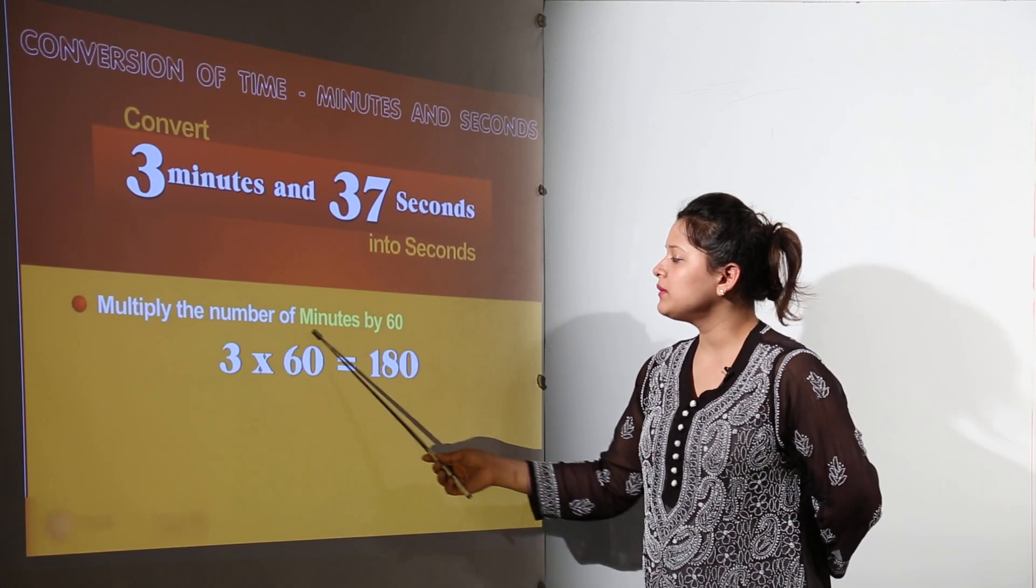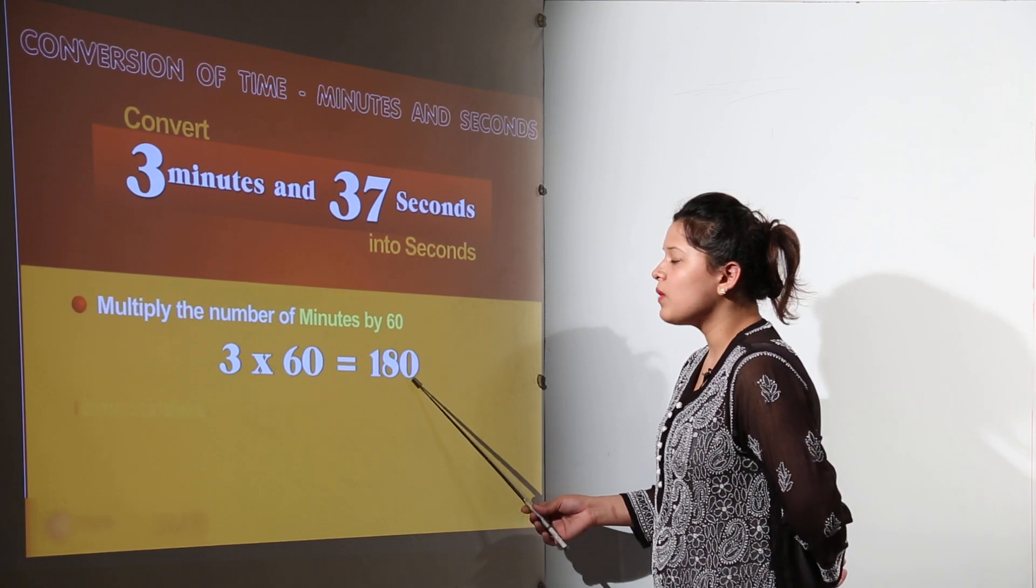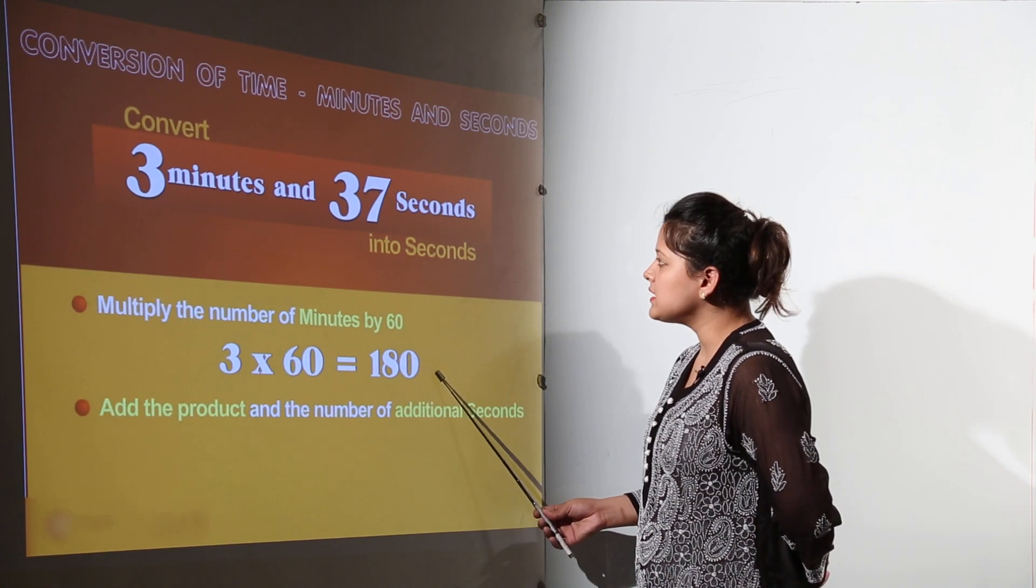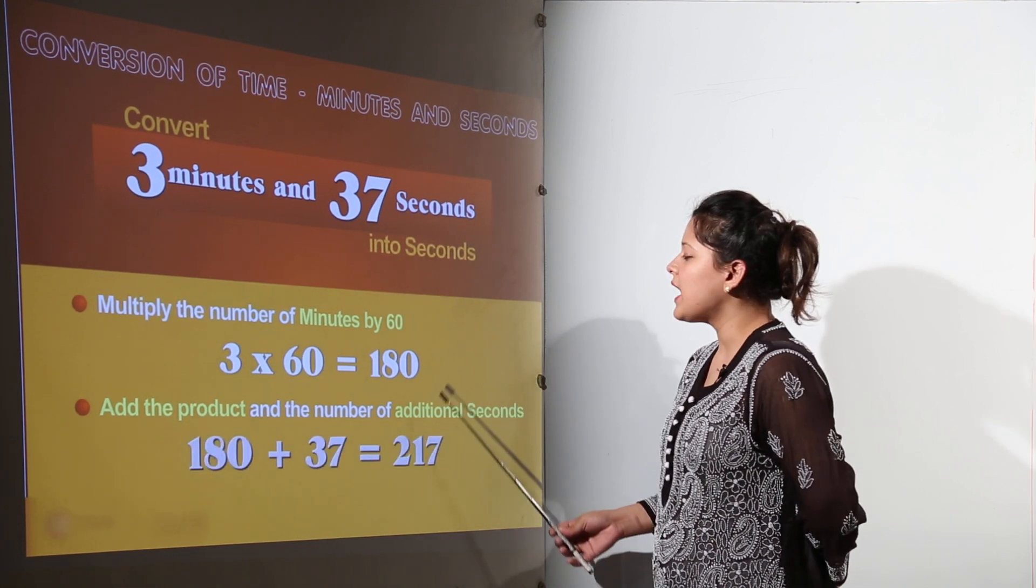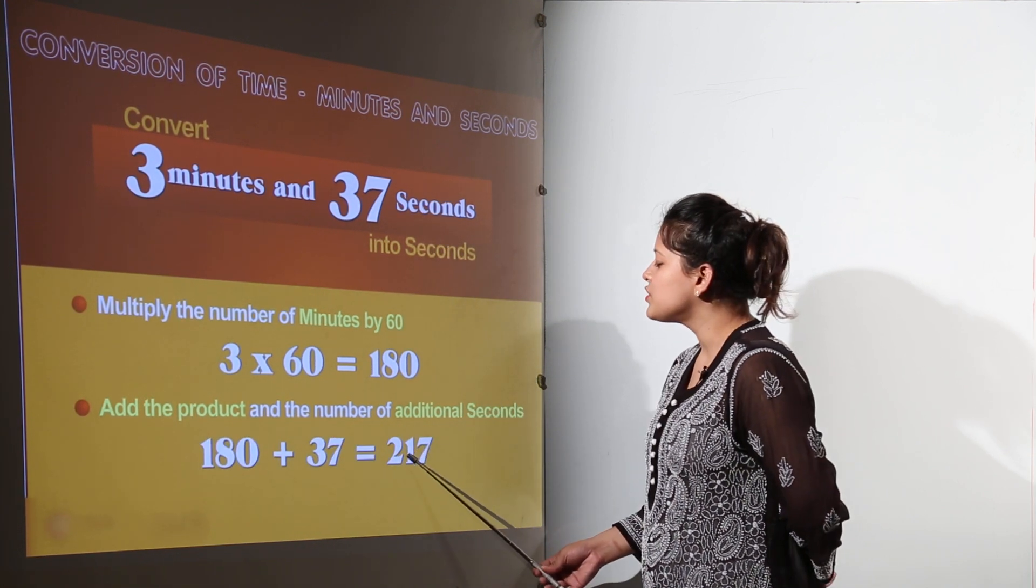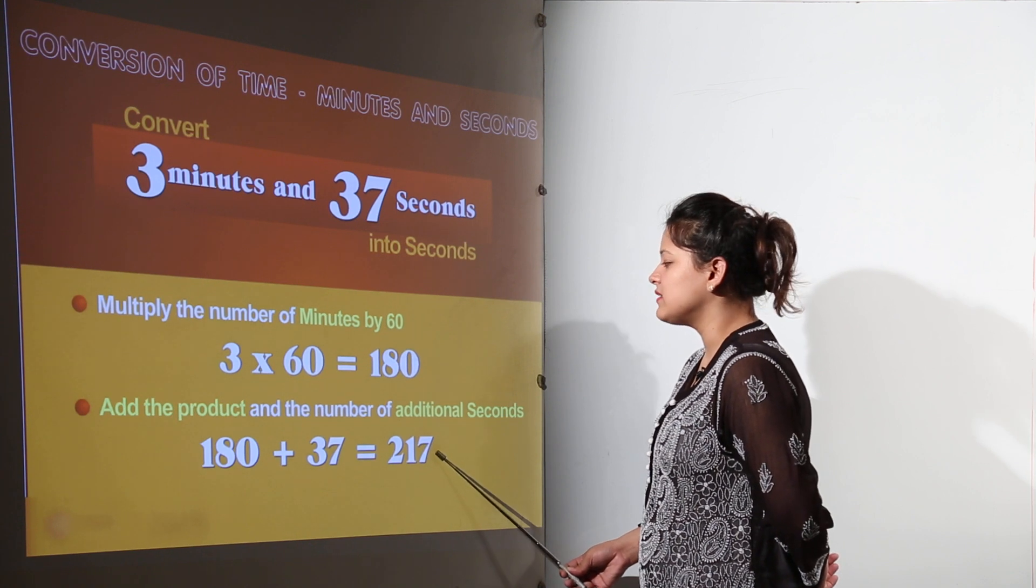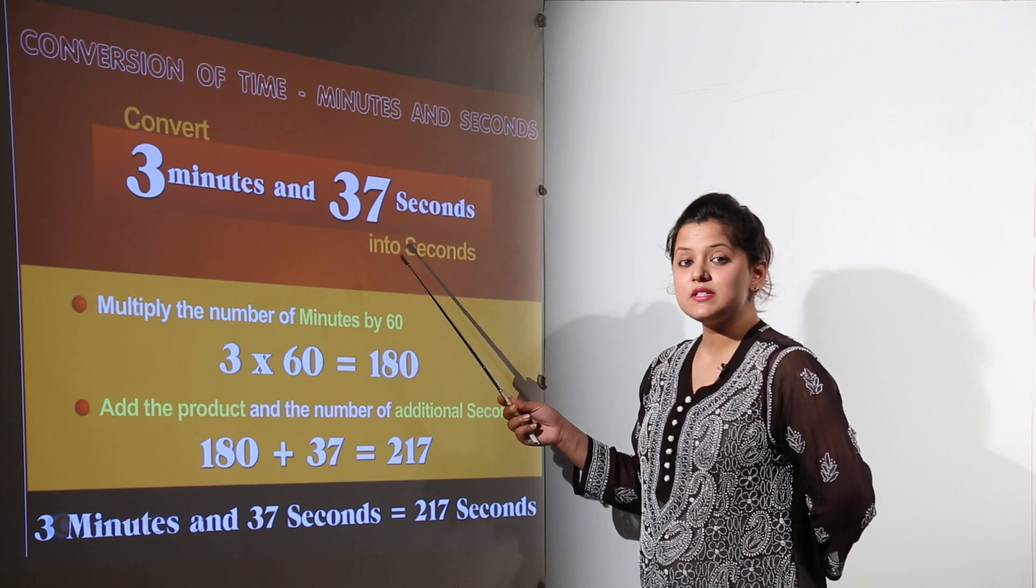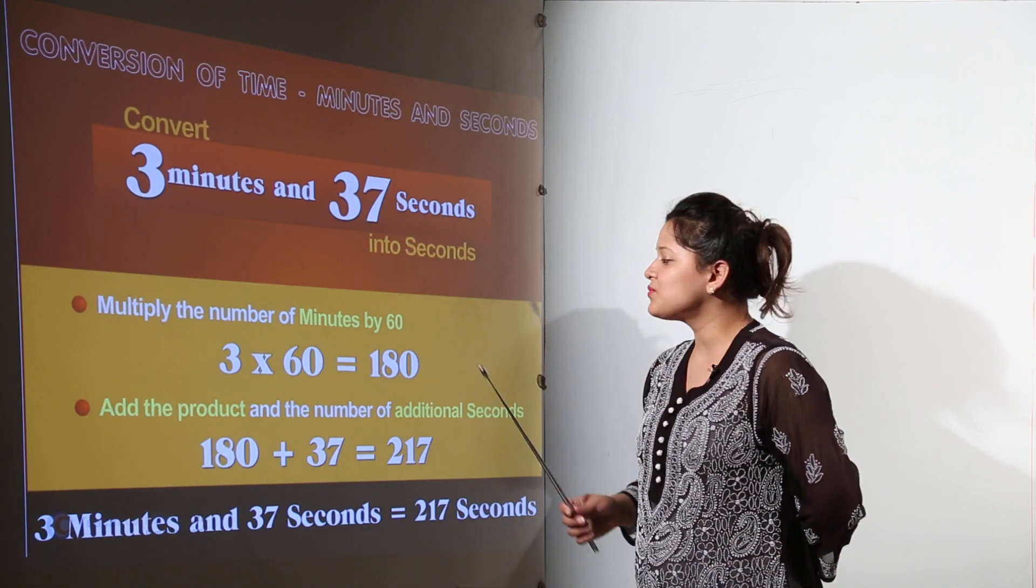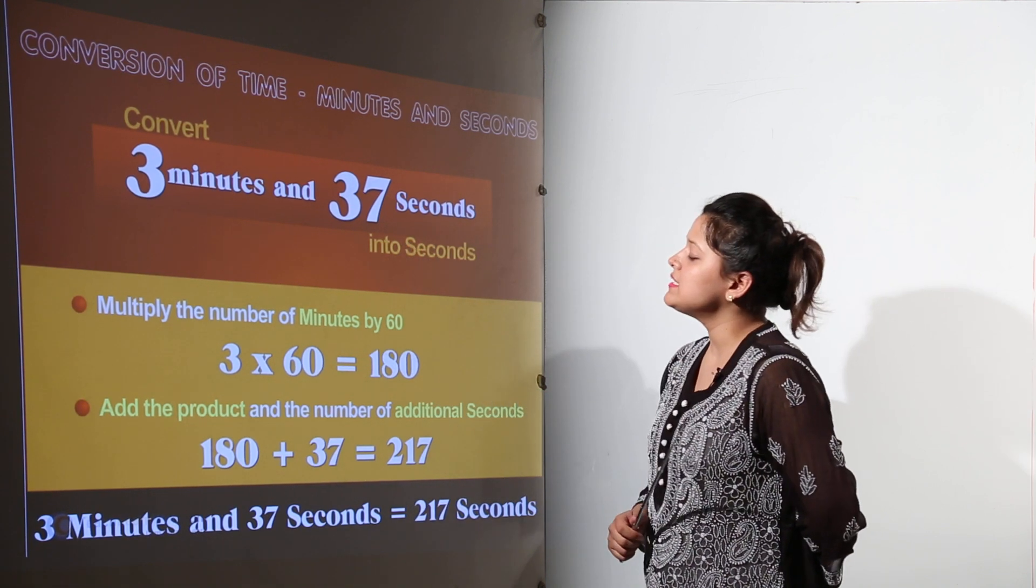We would have 3 multiplied to 60. That gives us 180. Now we have 180 seconds and we have the 37 seconds already. We add them up together to give us 217 seconds in total. That means the 3 minutes and 37 seconds completely into seconds would be 217 seconds.